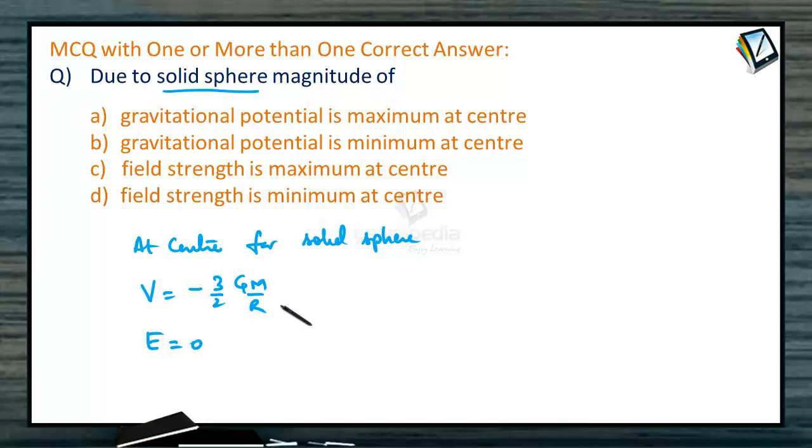So it is maximum at the center and electric field is 0 at the center. So correct option will be gravitational potential maximum at the center. Minimum is wrong. Field strength is maximum at center. Minimum at the center. So correct answer will be A and D.